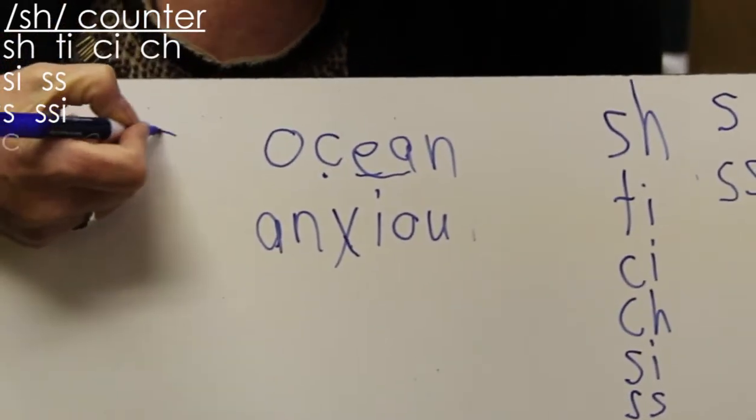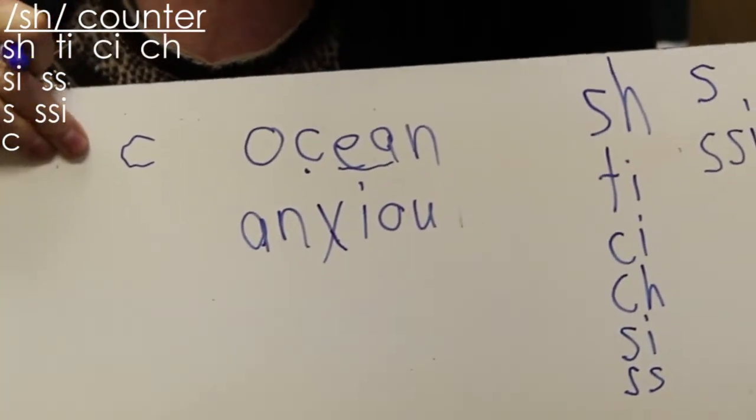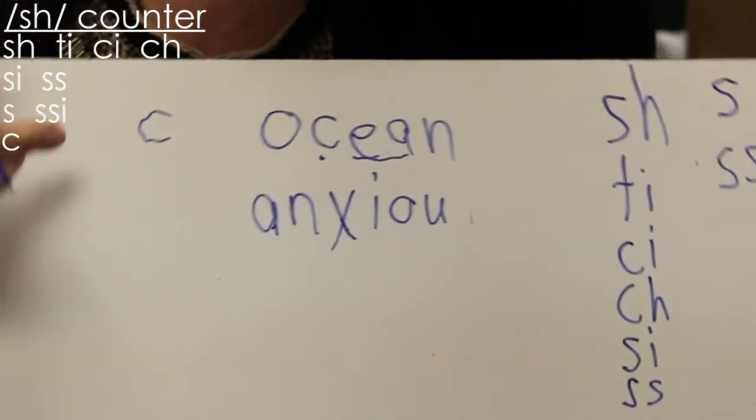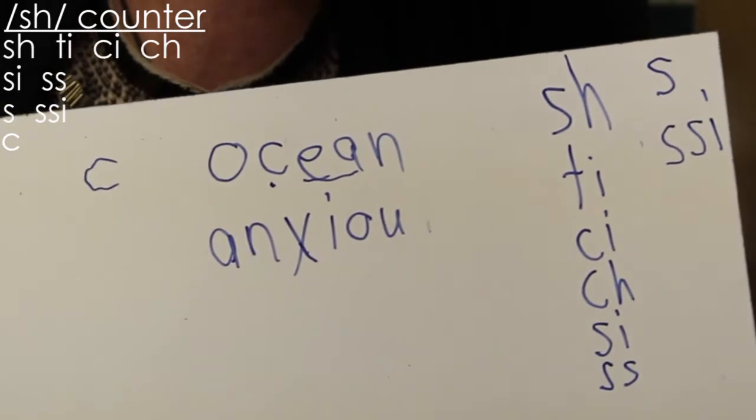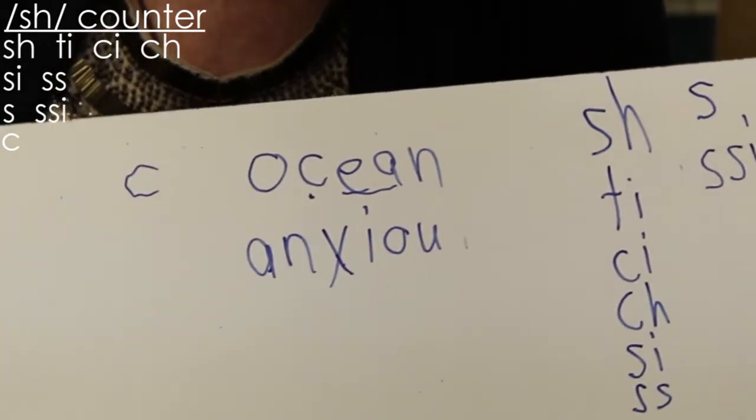All right, so in ocean just one letter, just like sugar was one letter. Anxious is kind of weird because to be honest it's more like an x spelling and then a sh spelling instead of just sh, but anyway...